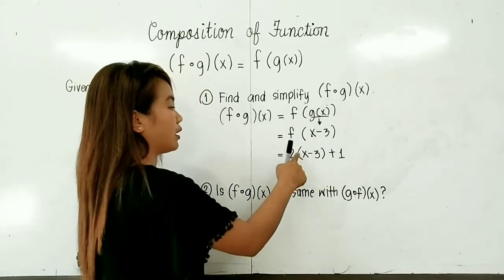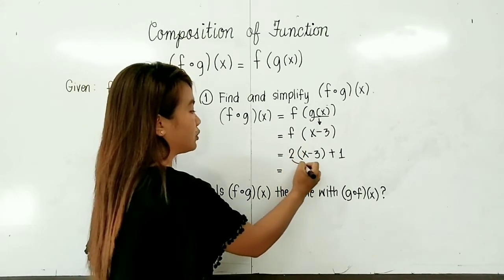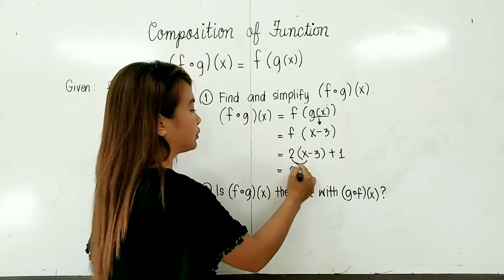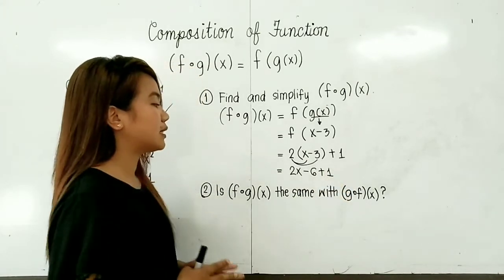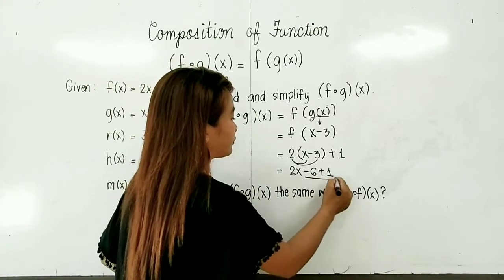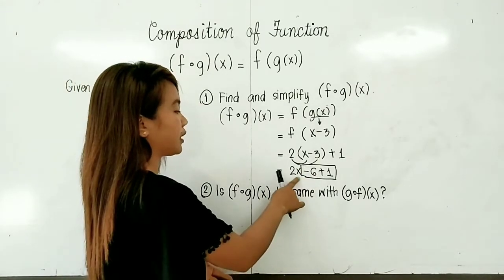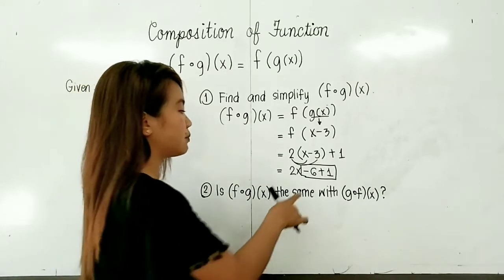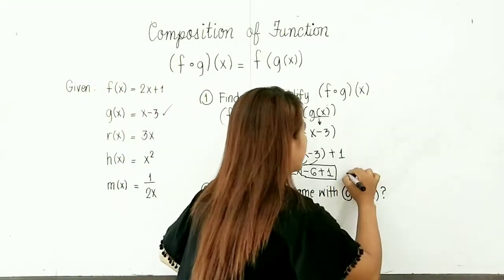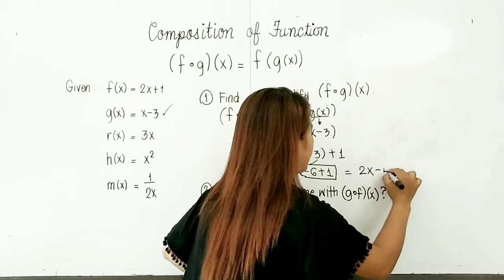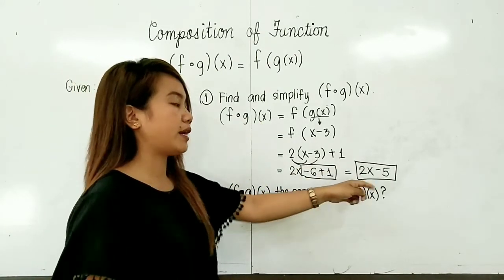Next, we will simplify. The parenthesis denotes multiplication, so we multiply x minus 3 by 2. 2 times x gives 2x, and 2 times negative 3 gives negative 6, plus 1. We combine the constants: negative 6 plus 1 equals negative 5. We cannot add negative 5 to 2x because 2x has the variable x. Therefore, our final answer is 2x minus 5. So f composed of g of x is equal to 2x minus 5.